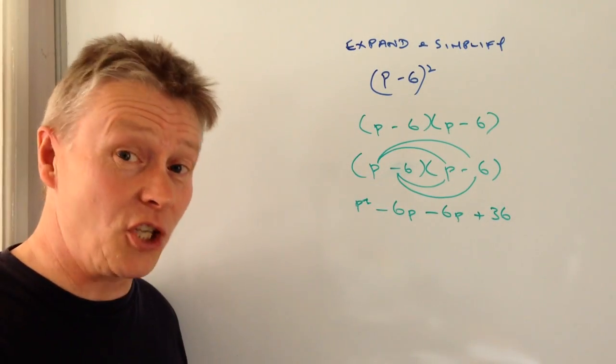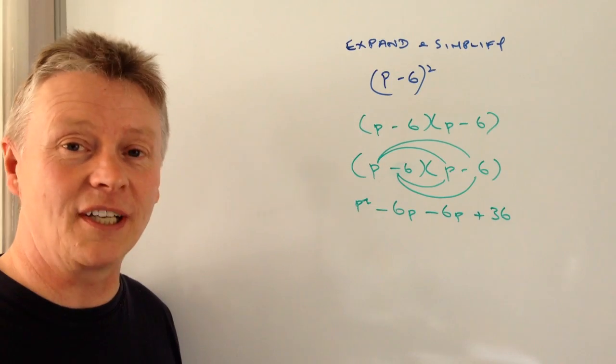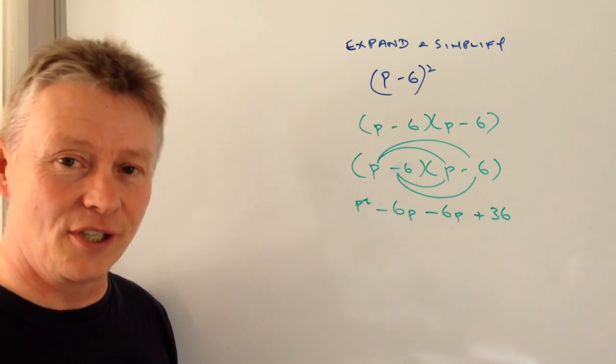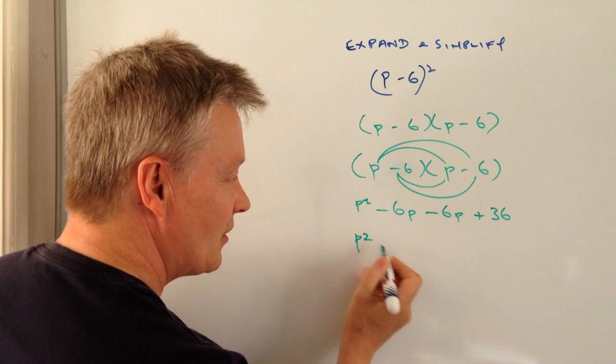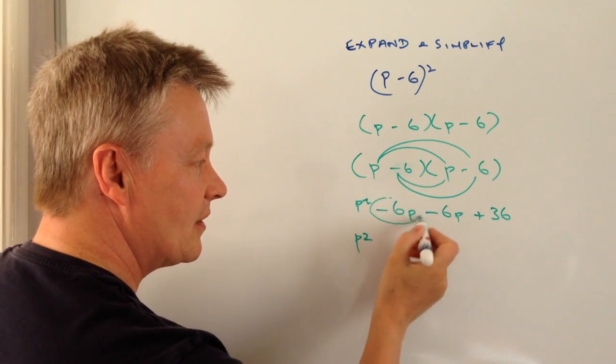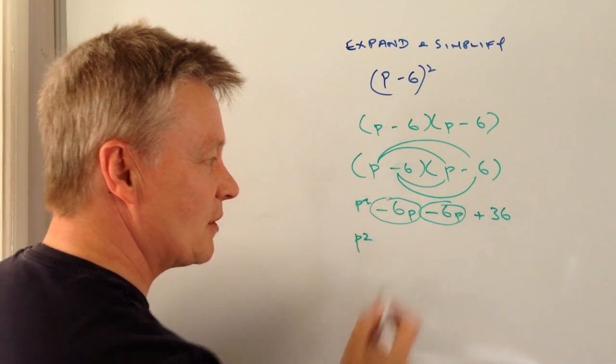Then it's just a case of tidying everything up really. So I'm going to gather in the like terms. So I've got p squared which stands on its own and then I've got minus 6p minus 6p.